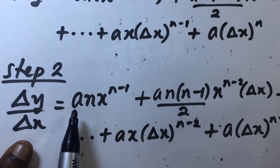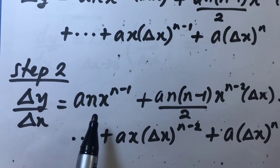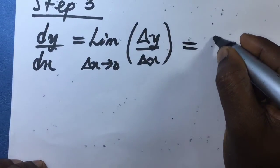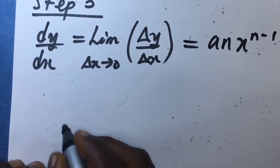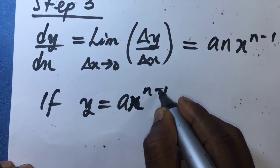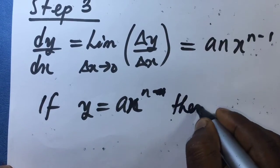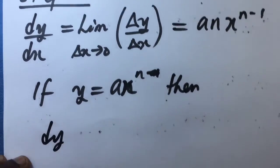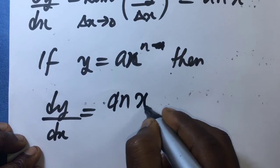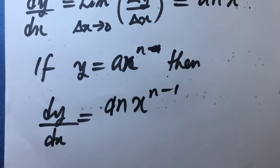So the only term remaining when we take the limiting value is anx^(n−1). Therefore, if y equals ax^n, then dy/dx must surely equal a·n·x^(n−1), and that concludes the proof. Thank you for watching this video — do like, share, and subscribe to the channel, make your good comments, and I'll see you in my next video.